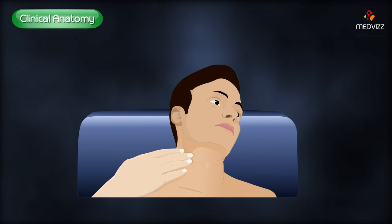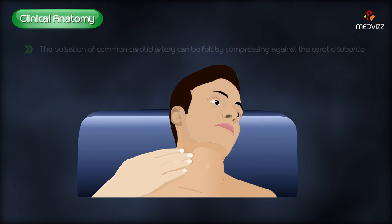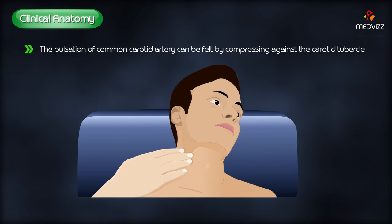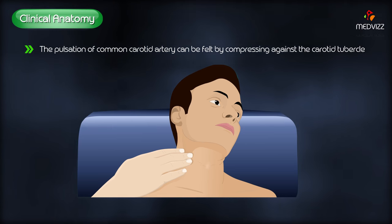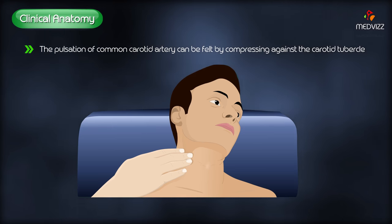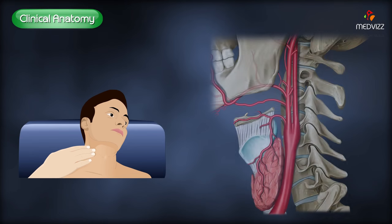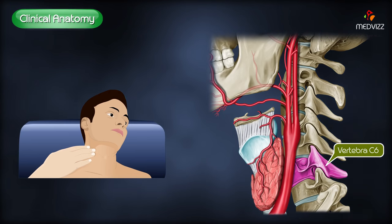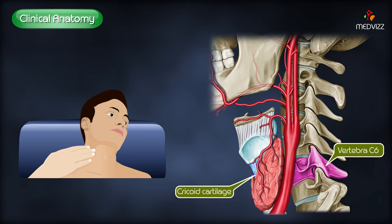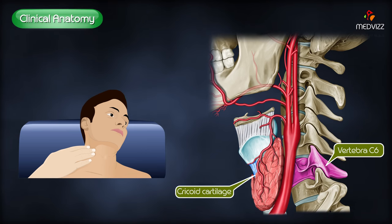Clinically, the common carotid artery is extremely important because its pulsation can be felt by compressing it against the carotid tubercle — that is, the anterior tubercle of the transverse process of the C6 vertebra — which lies at the level of the cricoid cartilage. With this, we complete the anatomy of the common carotid artery.